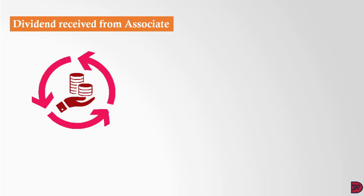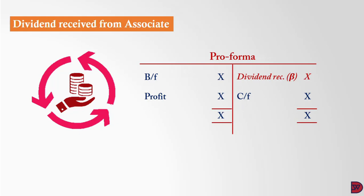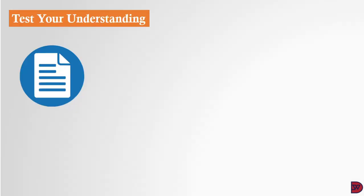For dividend received from associates, since it is an asset it should have a debit balance. We take the opening balance of the investment in associates from the non-current assets section, add the profit attributed to the parent from the associates, and compare to the closing balance for the current period. If nothing is paid out, the opening plus profits should equal the closing balance. If there is a difference, that difference is the dividend received from the associate.